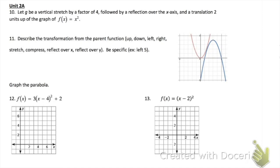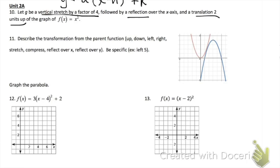For problem 10, we once again need to use transformations. A is a stretch or compress, H is left or right — minus is right, plus is left — and K is up or down, plus is up and minus is down. Problem 10 says we want a vertical stretch by a factor of 4 — that goes where A is. Reflection goes out in front of A. Translation two units up goes for K.